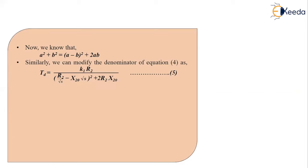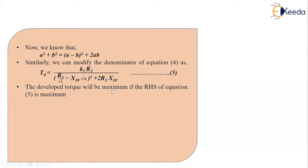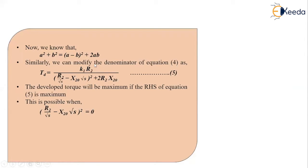Now we derive the condition for maximum torque. The RHS is maximum when the denominator is minimum. The denominator is minimized when the squared term (R2/√S − X20·√S)² equals zero, because that term is always non-negative. When it becomes zero, only the 2·R2·X20 term remains, giving the minimum denominator and therefore maximum torque.